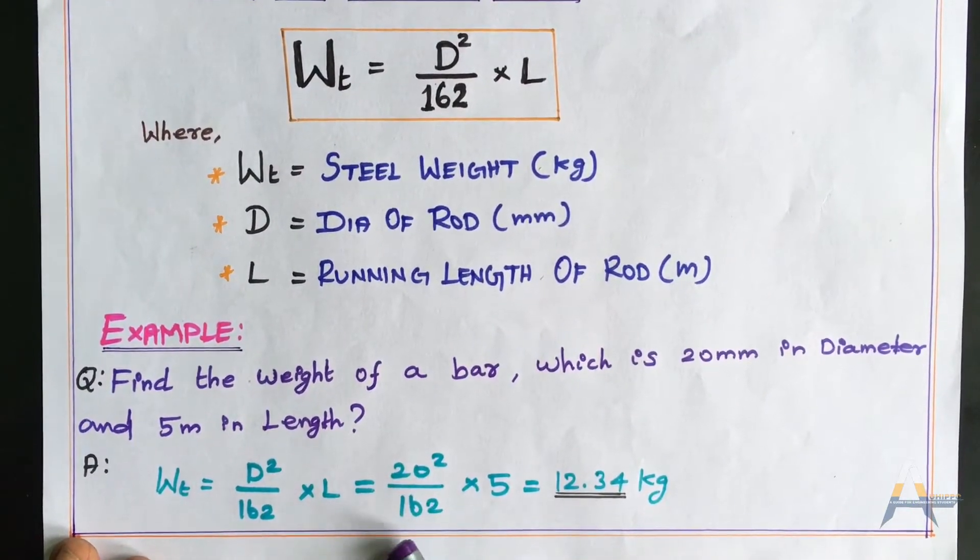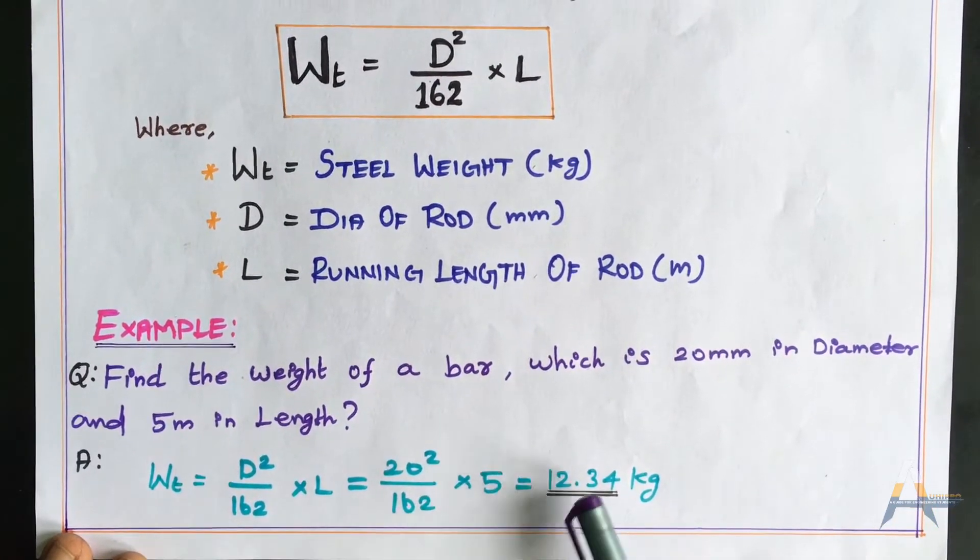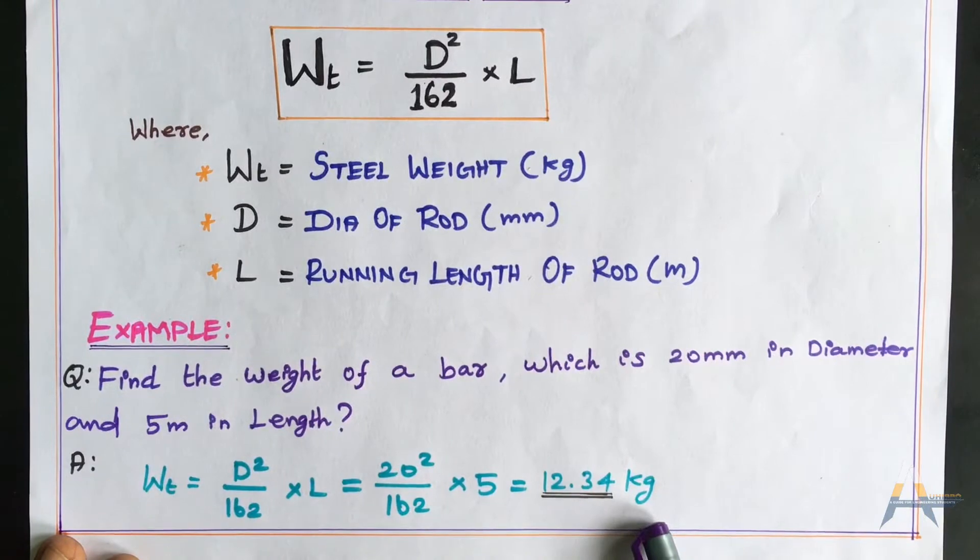20² divided by 162 times 5 meters equals 12.34 kg.